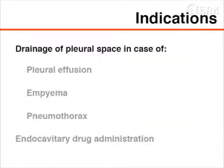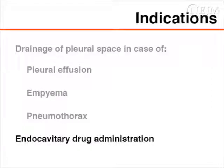The two most common indications for placement of a pleural catheter are drainage of the pleural space in a patient with pleural effusion, empyema, or pneumothorax, and endocavitary administration of a drug.